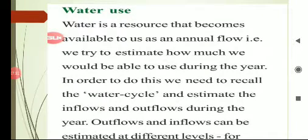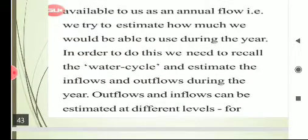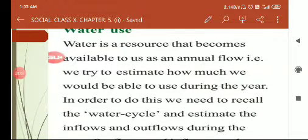Now let us have a look at different aspects of water use. Water is a resource that becomes available to us as an annual flow — we try to estimate how much we would be able to use during the year. In order to do this, we need to recall the water cycle and estimate the inflows and outflows during the year. When a nation wants to manage water so as to distribute it to all purposes correctly, it is necessary that the flow of water should be estimated as an annual flow, and after this estimation, it can be planned how to use the water for different purposes.